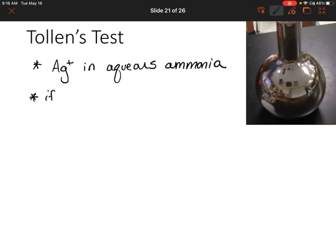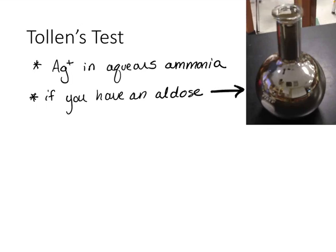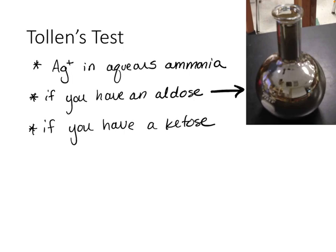If you have an aldose, the reaction is going to form a silver mirror on your glassware when everything mixes together. So you can kind of see a mirror effect going on inside that reaction flask. If you have a ketose, that reaction does not occur, so we don't get that mirrored effect in the reaction flask.